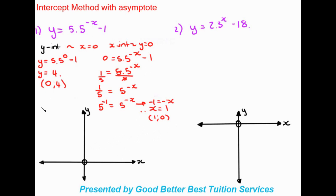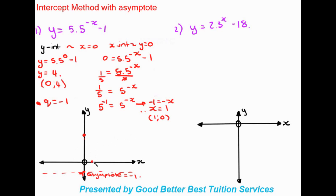The asymptote q = -1, so we find negative one on the graph and draw a dashed line — indicating this is the asymptote y = -1. We then plot (0, 4) as the y-intercept and (1, 0) as the x-intercept. The graph starts near the asymptote and inclines upward through both points.